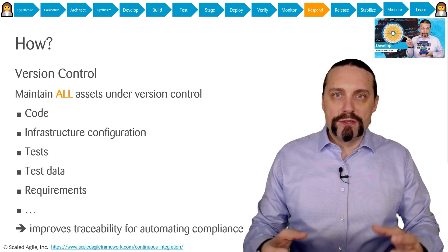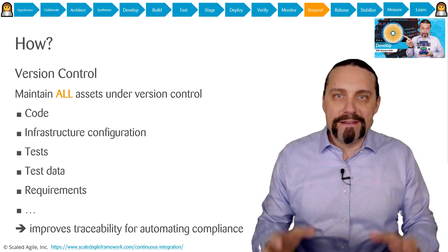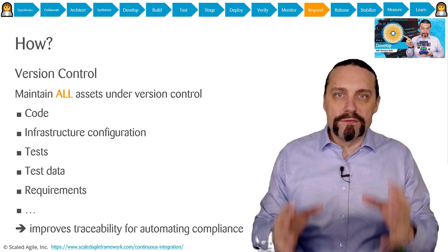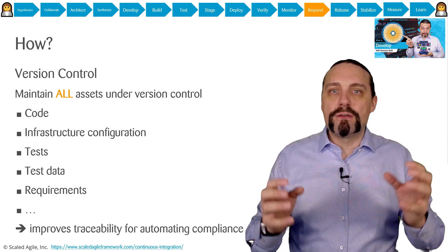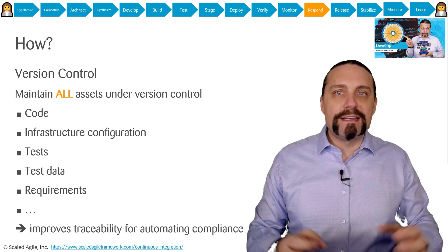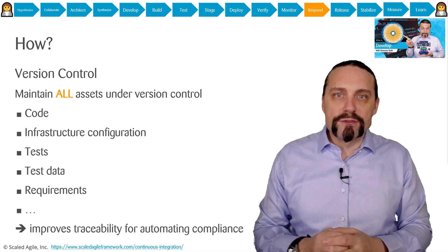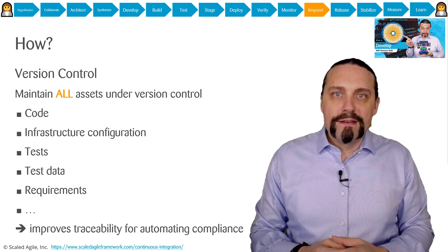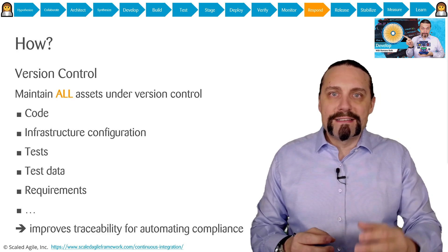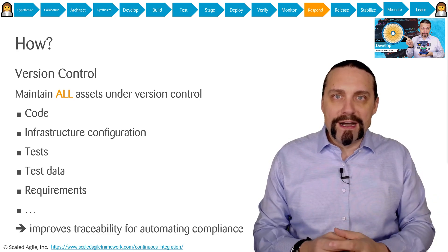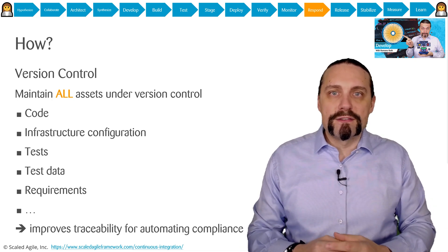To respond to an incident, we need to have everything under version control: all of the code, all of the infrastructure configuration, all of the tests, all of the test data, all of the requirements. Everything needs to be under version control — only with that are we able to analyze incidents, see what has changed, when, and why. And with that we are also able to make fast rollbacks.